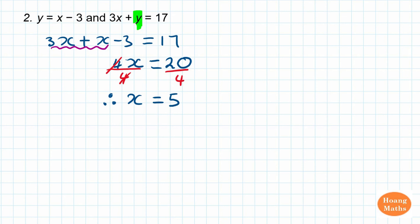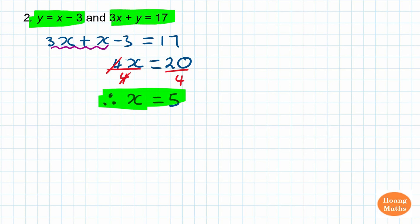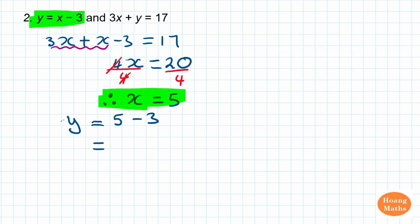Then I substitute x equals 5 into the first equation — it's just easier and faster. So y equals x minus 3. With x equal to 5, I put 5 minus 3 down, which is 2. Therefore, x is equal to 5 and y is equal to 2.